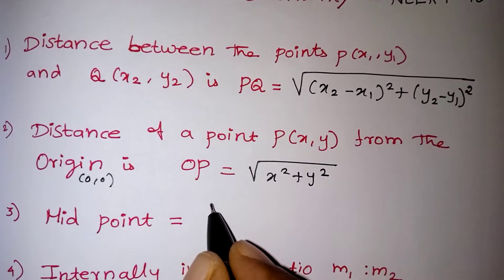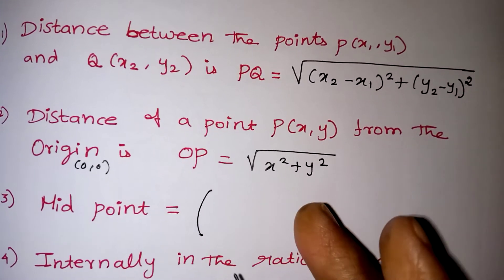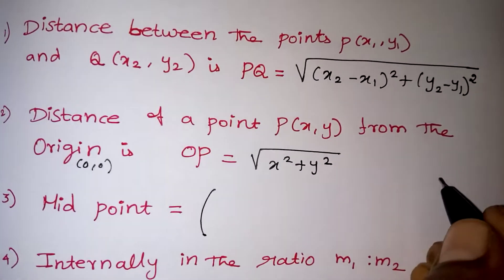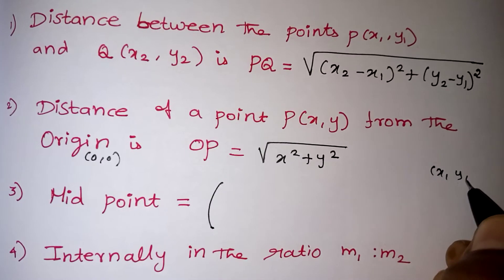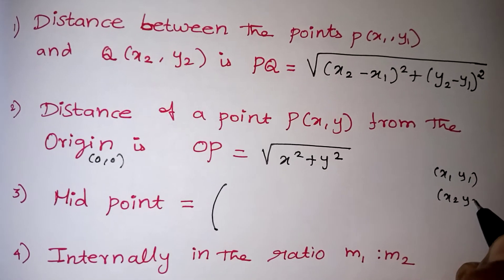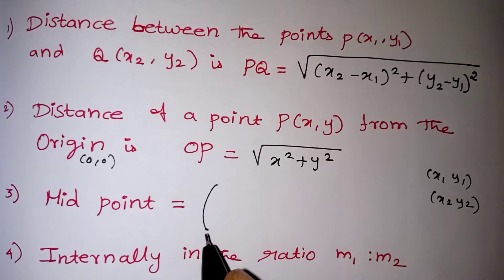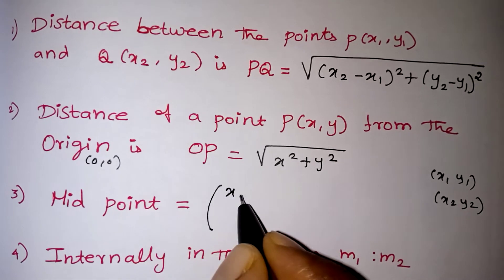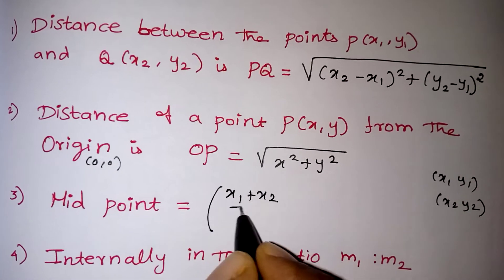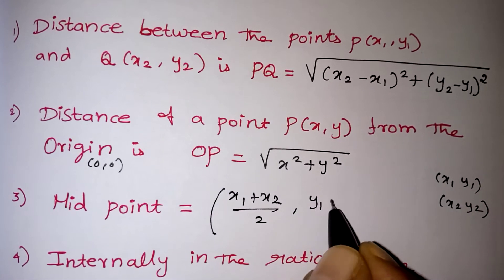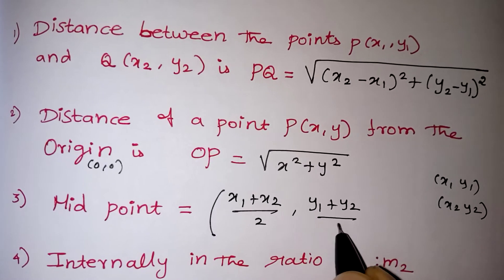The next formula, midpoint. Midpoint formula, again two points will be given to you. That point will be taken as first point is x1, y1, second point is x2, y2. We have to find the midpoint. Midpoint formula, x1 plus x2 by 2 comma y1 plus y2 by 2. This is a midpoint formula.